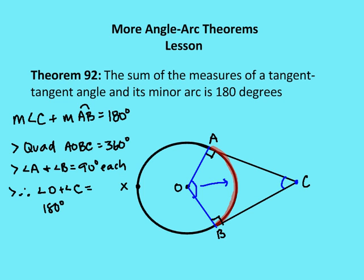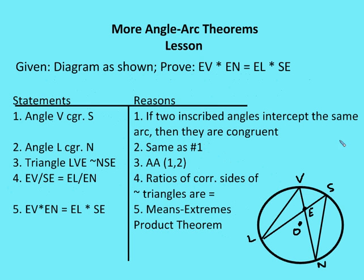Now let's look at two practice problems using the theorems we just learned. In the first one, given a diagram with two triangles created by a bunch of chords, I want to prove that EV times EN equals EL times SE. To do this, I'll show that triangles EVL and ESN are similar. First, angle V is congruent to angle S because they both intercept the same arc LN. Since two inscribed angles intercept the same arc, they are congruent.